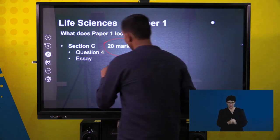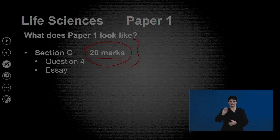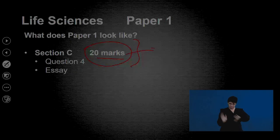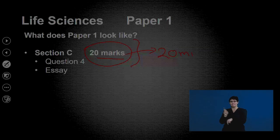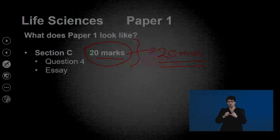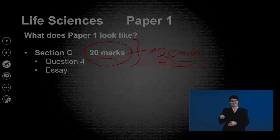Section C has 20 marks. The recommendation is to finish Sections A and B quickly enough to have a bit more than 20 minutes available for the essay. Finishing the earlier sections efficiently gives you the extra time needed to do justice to this section.